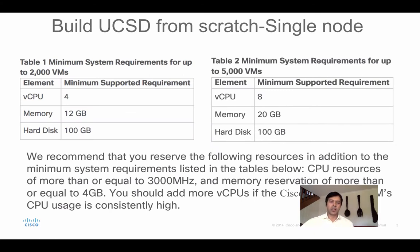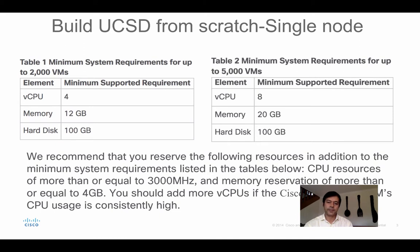Assuming we've decided on single node, the VM requirements — which are on the website — include CPU and RAM. More CPU and more RAM is standard, and reservation is important: resources must be reserved in VMware so they don't compete with other resources. There's also a recommendation that CPU should be greater than or equal to 3,000 MHz and memory greater than or equal to 4 GB. If CPU is consistently high, you should look into that.